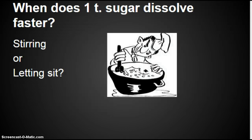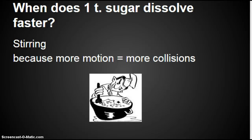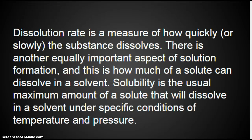Let's go back to sugar. When does one teaspoon of sugar dissolve faster — when it's being stirred or when it's left to sit? It dissolves faster when stirring because the more motion, the more collisions, the more bombardment, the faster it dissolves. Dissolution rate, or how fast something dissolves, is a measure of how quickly or slowly a substance dissolves. There is another equally important aspect of solution formation: how much of a solute can dissolve in a solvent.